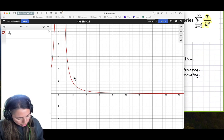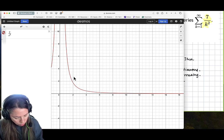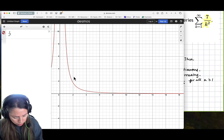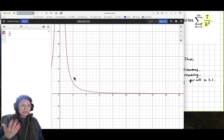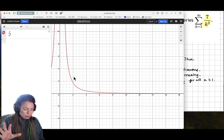The third part is that allowing f of n to be the sequence 7 over n squared for all values of n greater than or equal to 1. And then it does look like it just is a nice smooth function. So it does look like it satisfies those three conditions.